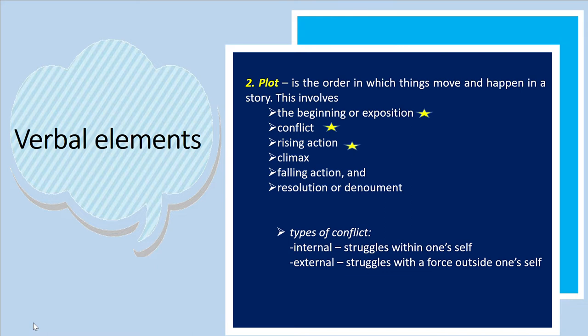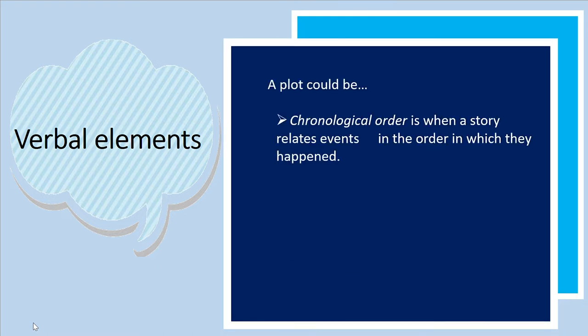The rising action are the events in the story that become complicated as the conflict is revealed — the events between the introduction and climax. The climax is the turning point of the story where readers wonder what will happen next. The falling action is where the resolution begins and events start to fall into place. The resolution or conclusion is the final outcome of events in the story. A plot could be in chronological order or use a flashback.